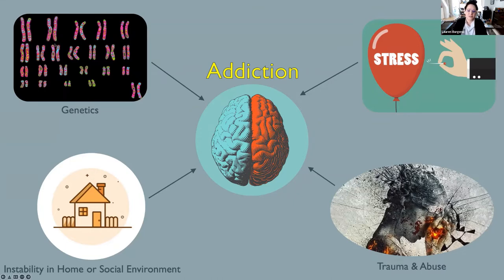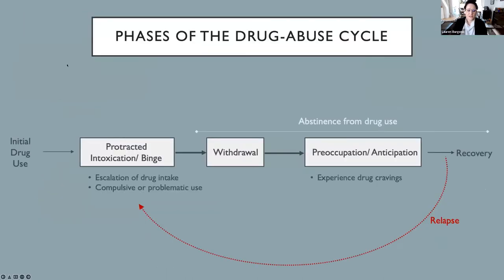Some major vulnerability factors include genetics, instability or bullying in the home or social environments, trauma and abuse, and stress. These are known to increase the likelihood of developing an addiction, but you don't even necessarily have to have any one of these factors. Addiction can be broken down into three major phases. Following initial drug use, there's a protracted intoxication phase during which drug intake tends to escalate — both in the amount taken per dose and the time spent procuring and using drugs — and it's in this phase that drug use becomes compulsive or problematic.